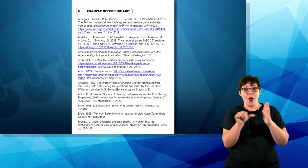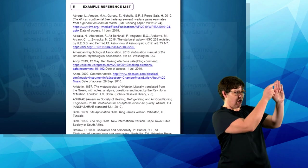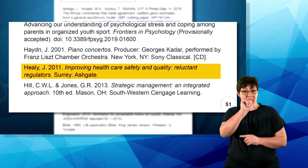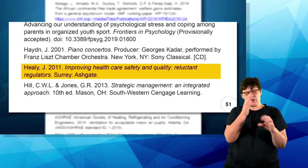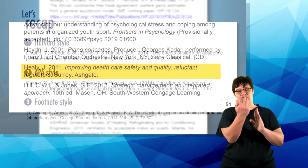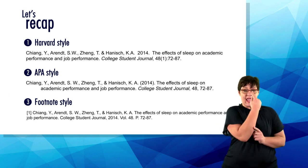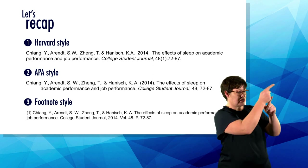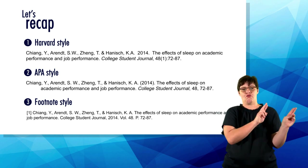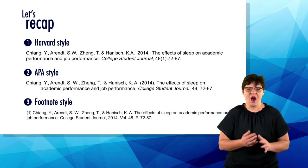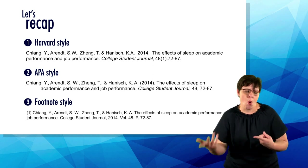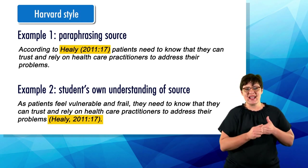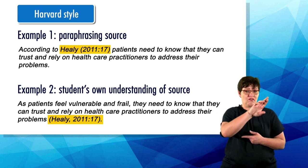It is crucial that there is a reference list entry for every single text reference. As Healy is one of the sources that the student used, all the details of this source must be included in the reference list. Each referencing style has its own guidelines in terms of text references and the reference list entries. These guidelines are usually available on the style's website or from your faculty librarian. We are now going to take a closer look at the guidelines of a version of the Harvard style and the APA style.